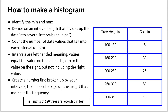An important characteristic is that these bins are what we call left-handed, meaning we include the value on the left and go up to but not equal to the value on the right. So the first bin is for any tree from 100 feet up to 149.9999. The moment we get a tree that's 150 feet, it goes into the next bin. So we call them left-handed bins.